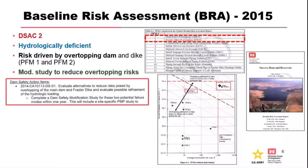It's hydrologically deficient, driven by overtopping. So the decision action item was to perform a modification study and evaluate how to reduce the overtopping risk. That's the decision-making process.